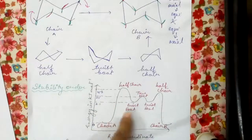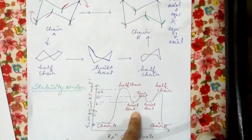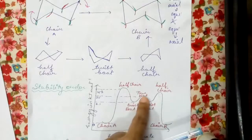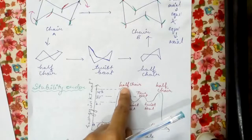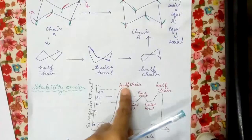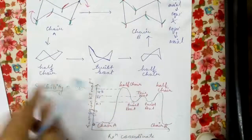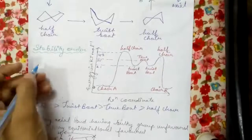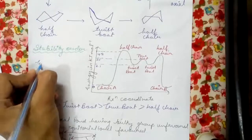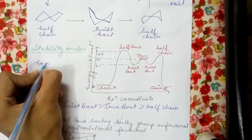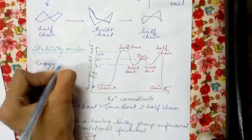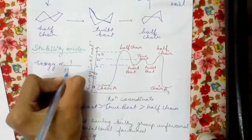And then true boat, and then finally half chair. It is the least stable one. On the basis of energy we know that higher the energy, less is the stability. Energy is inversely proportional to stability.